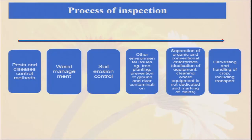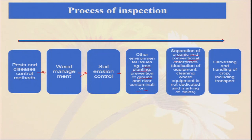Different types of pest and disease control methods, weed management, soil erosion control, environmental issues like tree planting for physical barriers, ecosystem health, environment-friendly practices, and preservation against groundwater contamination are all necessary. Separation of organic and conventional enterprises is required — if on the same farm you have both organic and inorganic activities, there must be physical distance and separation with no chance of mixing — not only in production, but also in storage, transportation, and harvesting handling.